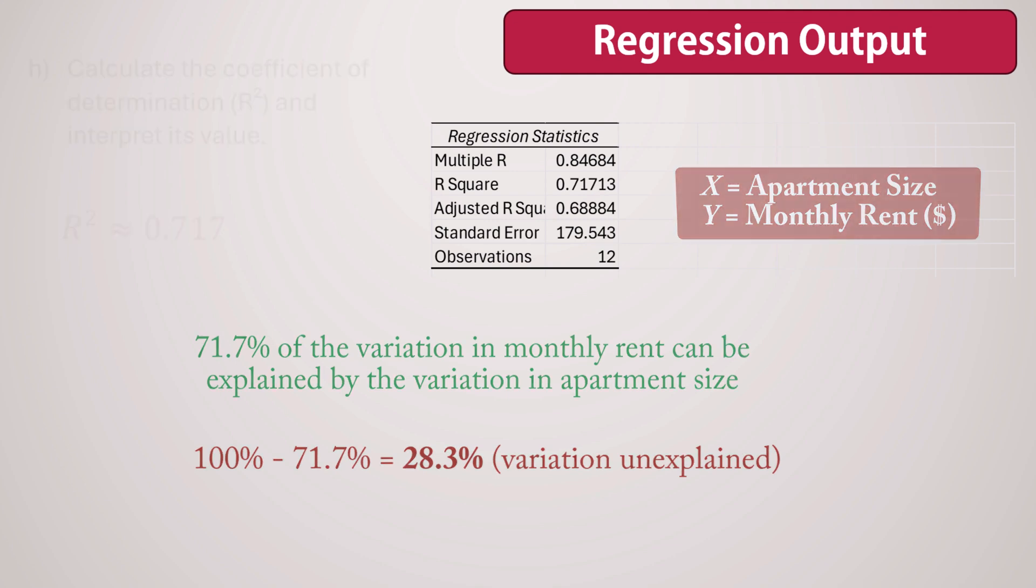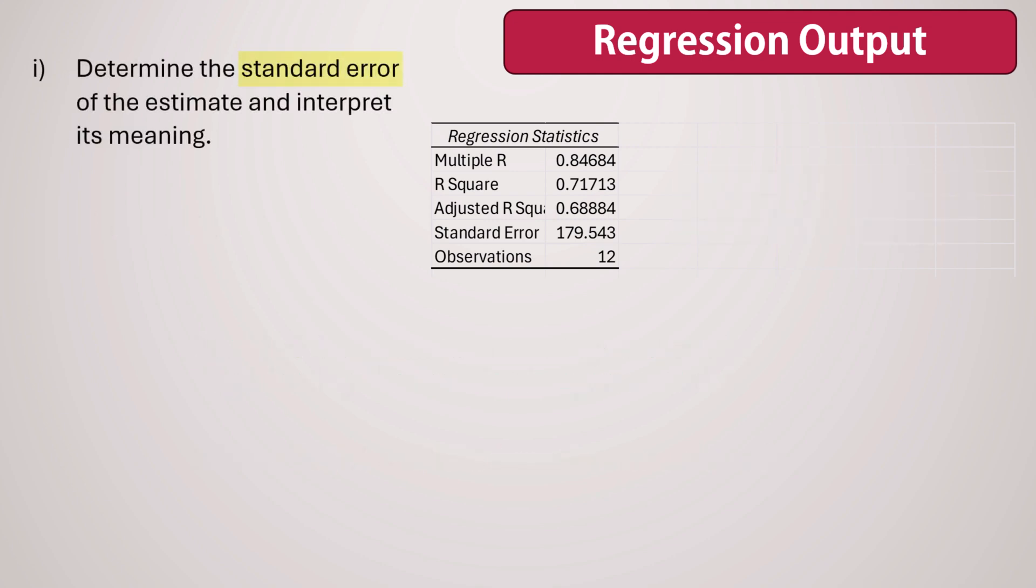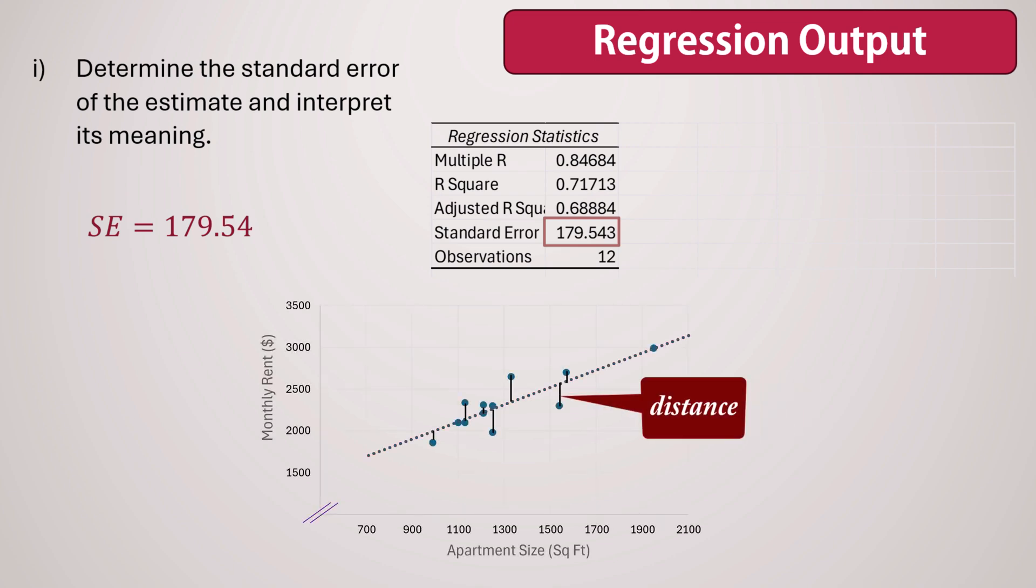We now determine the standard error of the estimate and interpret its meaning in this context. We can calculate it using a formula or in Excel using the function STEYX. We can also find the standard error directly in our regression output as 179.54. It is essentially the standard deviation of the residuals. It's an estimate of the average distance between each data point and our regression line.